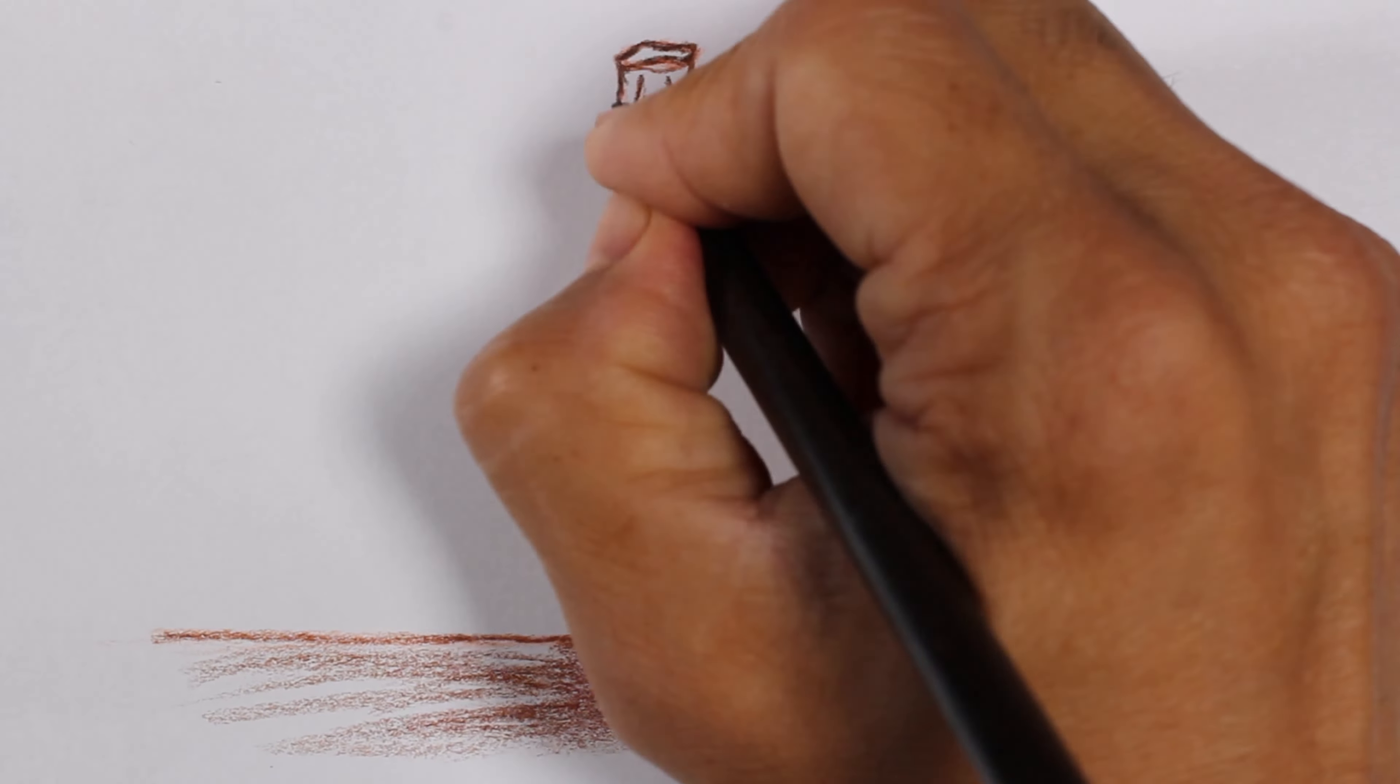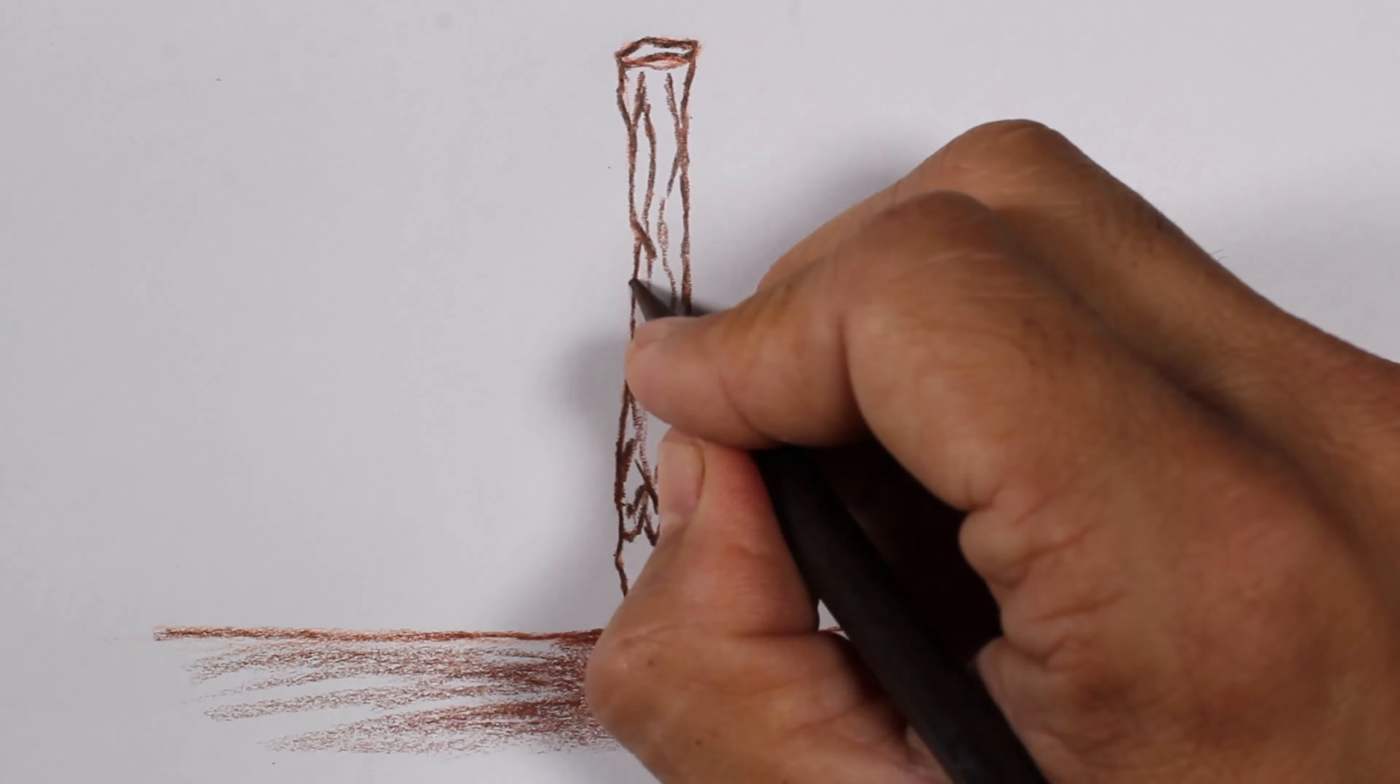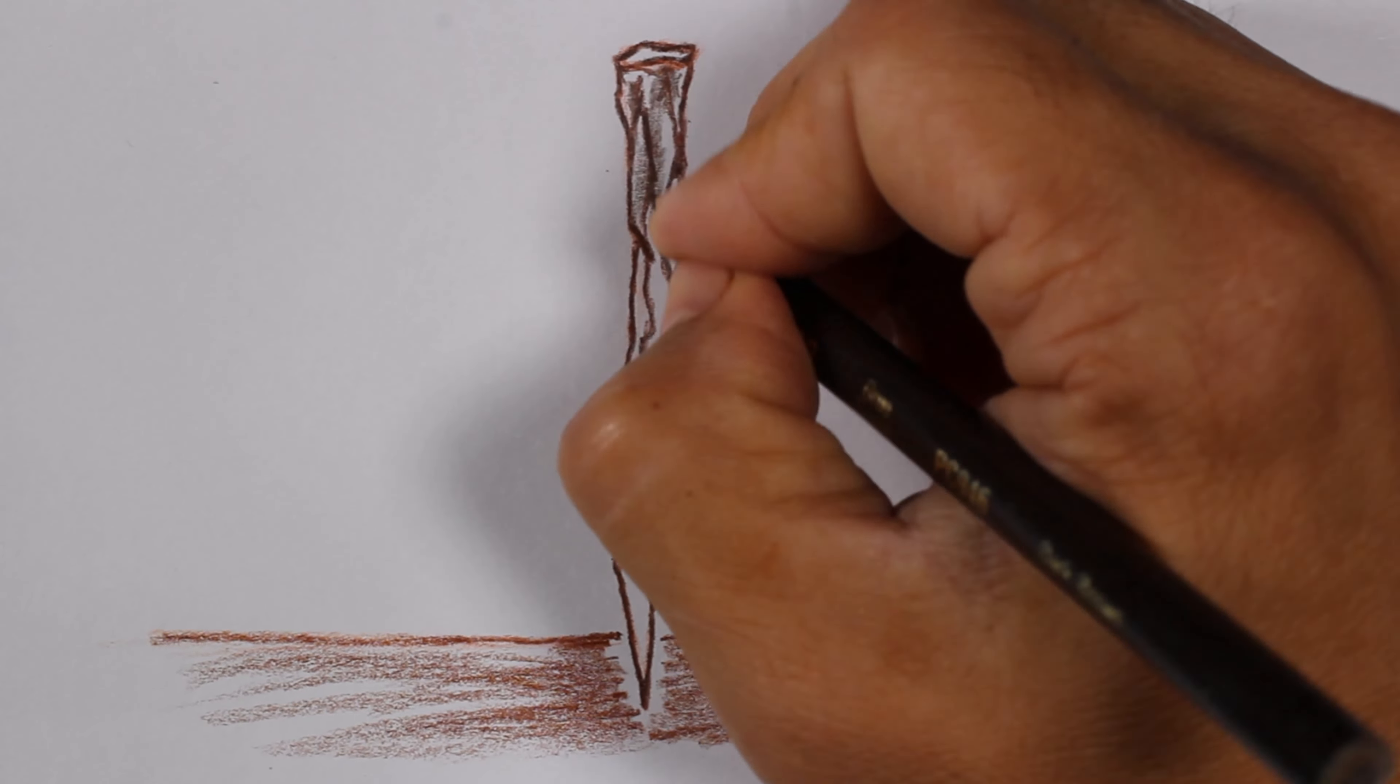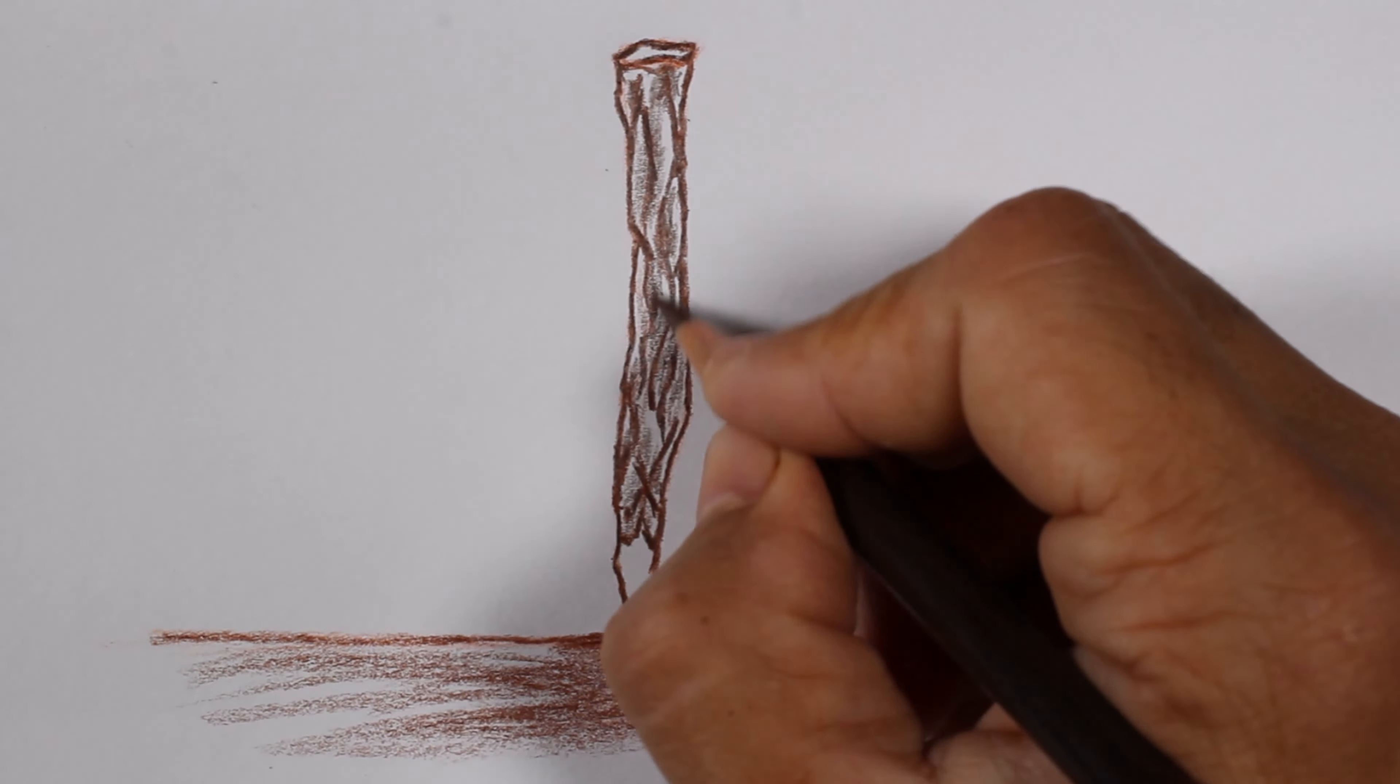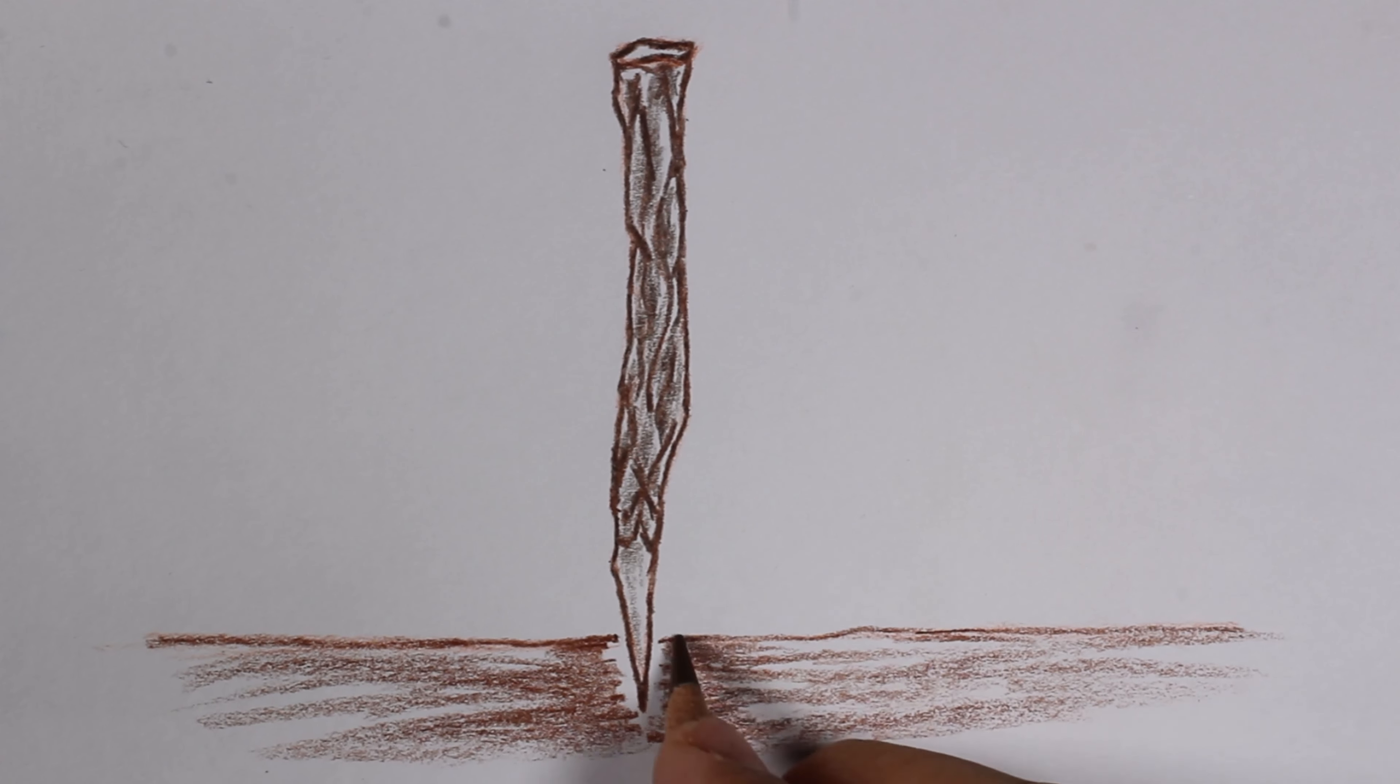Detail in the stick is added to represent the texture of the bark. Shading or value in the stick will provide more detail. We will also add more detail to the shading of the soil.